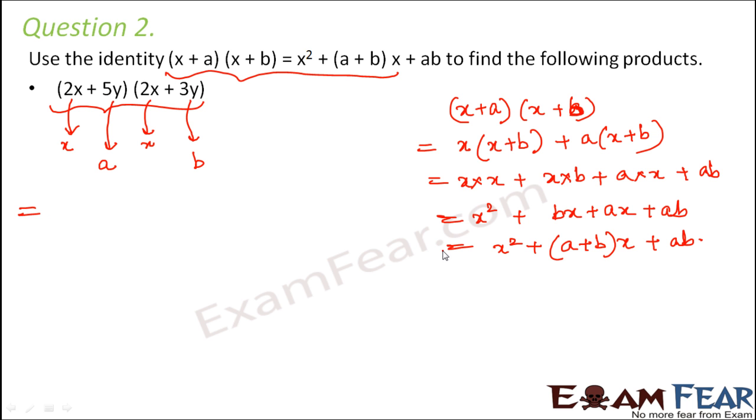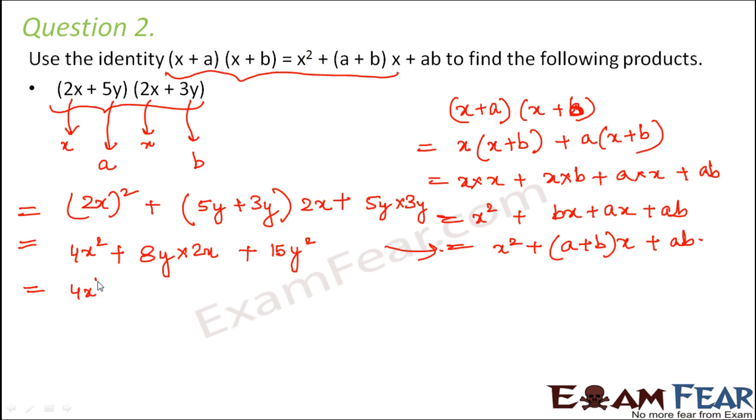Now just put it into this formula: x², that is (2x)², plus (a + b), that is (5y + 3y), times x, that is 2x, plus a·b, that is 5y·3y. So (2x)² would be 4x², 5y + 3y would be 8y times 2x, plus 5y·3y would be 15y². This equals 4x² + 16xy + 15y².